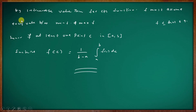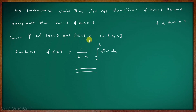By the Intermediate Value Theorem, for a continuous function f, f must assume every value between the minimum and maximum value. Hence there exists at least one point c in closed interval [a, b] such that f of c equals 1 divided by (b minus a) times the integral from a to b of f(x) dx.